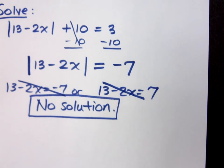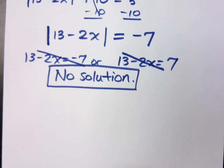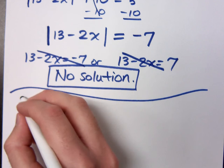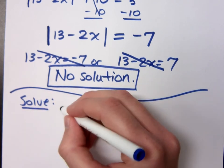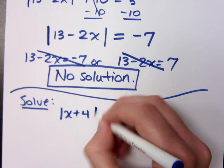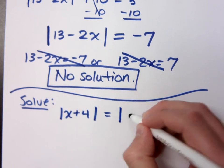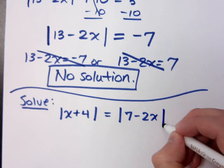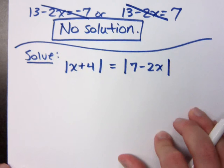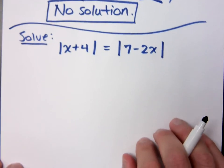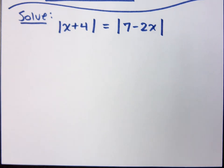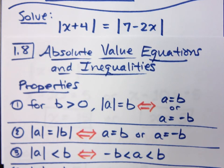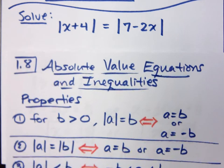Let's try one that maybe, hopefully will not be a no solution guy. Solve the absolute value of x plus 4 is equal to the absolute value of 7 minus 2x. Now, according to the properties that I had before. Let's look at this at the very bottom here.